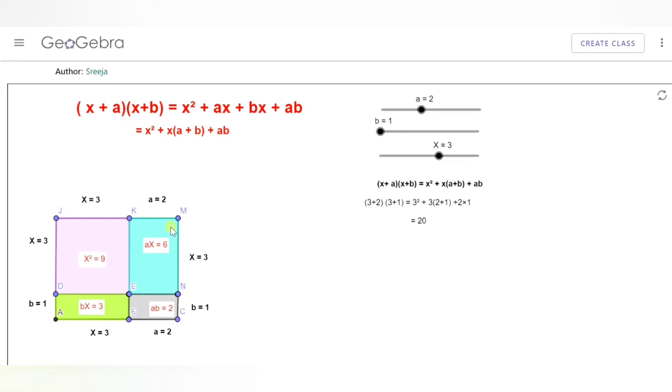Now this rectangle for ease of calculation I have divided into four parts. The first part is JKED which has sides x and x, so it's a square with area x².